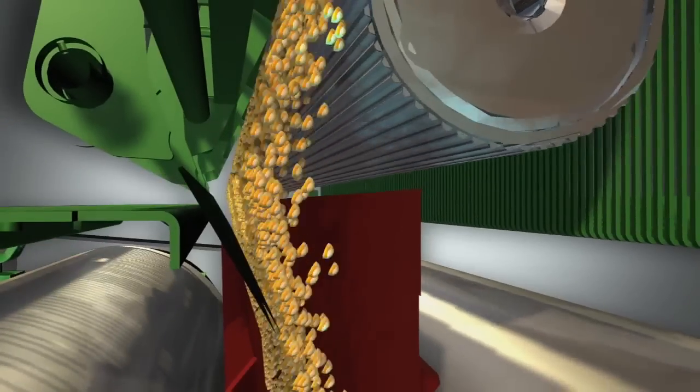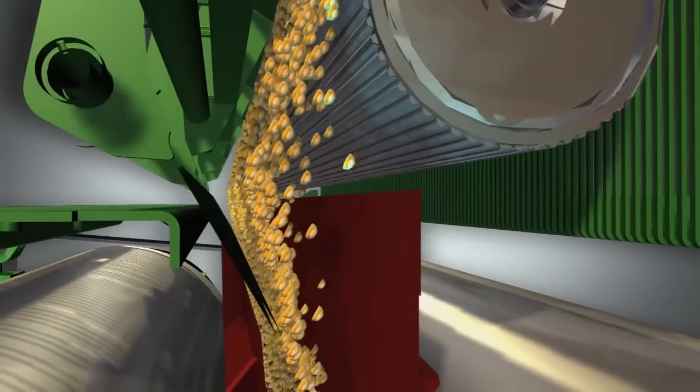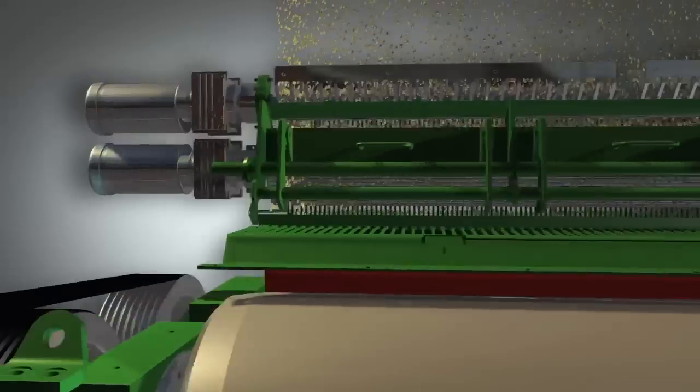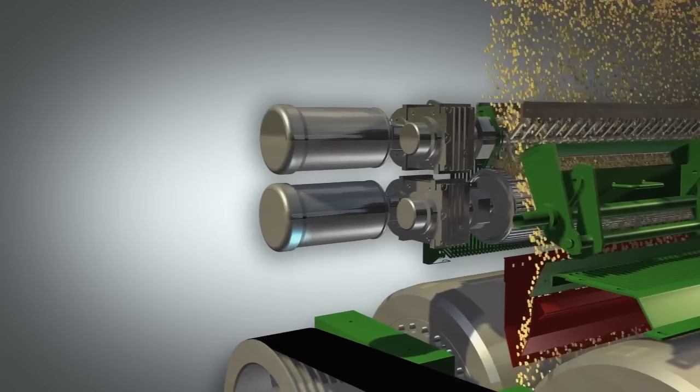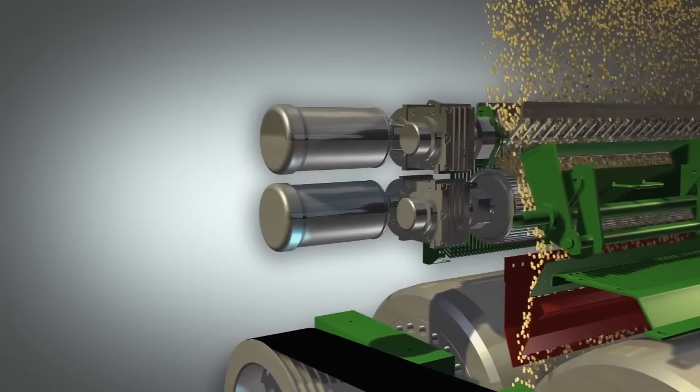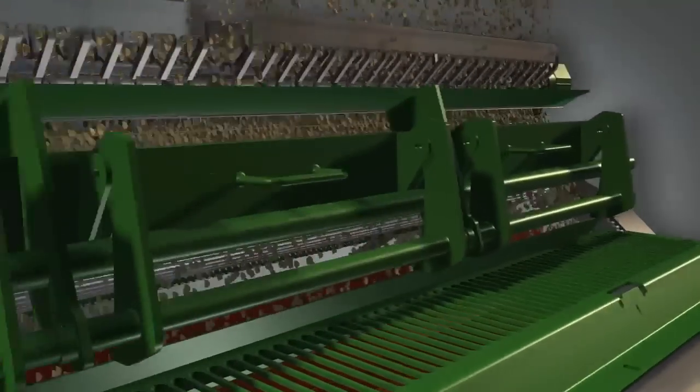The feeder roll, working in conjunction with the lump breaker, provides consistent, uniform feed distribution across the length of the rolls and can be equipped with a variable frequency drive for infinite feed rate control.